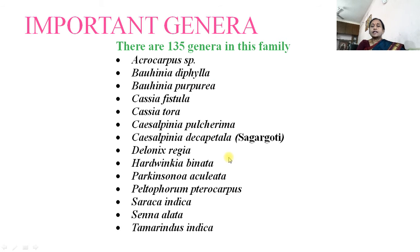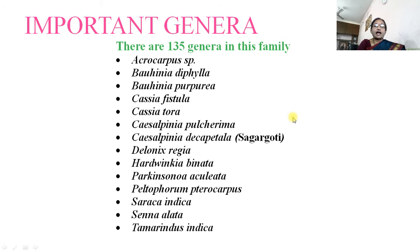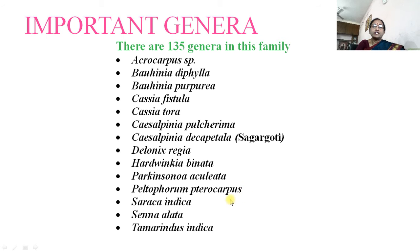There are about 135 genera included in this family. Some of the commonly found plants in our country are: Acrocarpus species, Bauhinia diphylla, Bauhinia purpurea, Cassia fistula, Cassia tora, Caesalpinia pulcherrima (commonly called Gold Mohor), Caesalpinia decapetala (that is Sagargoti), Delonix regia, Hardwickia binata, Parkinsonia aculeata, Peltophorum pterocarpum (Yellow Gold Mohor), Saraca indica, Senna alata, and Tamarindus indica, commonly called Imli or Tamarind.